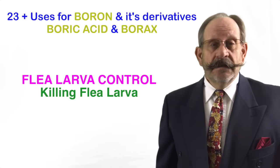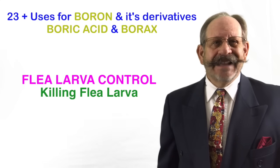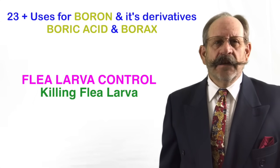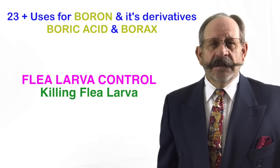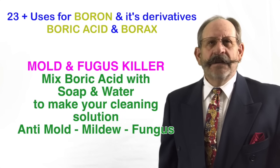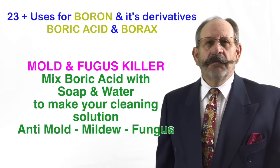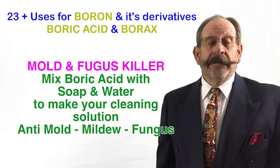Six: flea larva control in carpets. Just sprinkle a light dusting of boric acid on your carpet and it will kill flea larvae — it won't kill adults, however, but it will kill any eggs that hatch. Seven: as a mold and fungus killer. Mix a little boric acid and soap in water and use it as a cleaner. It'll kill mold, mildew, and fungus, which cause illness and allergies. It's a great shower cleaner.